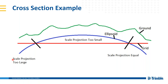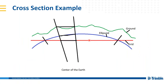I get calls from guys who say something's wrong because they're used to having a scale factor smaller than one and now they've got one larger than one. What you have to remember is it really depends on where you are. I had a guy call a couple of weeks ago working in North Carolina near the Virginia border — his scale factor was above one and he was concerned because he'd never seen that. He was used to working between the standard parallels.